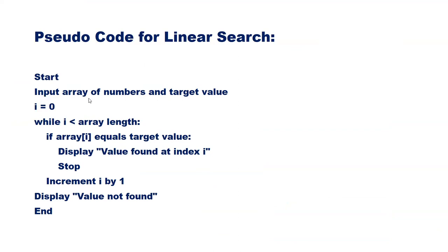Pseudocode: Start. Input array of numbers and target value. i equal to 0. While i less than array length: if a[i] equals target value, display 'value found at index i' and stop. Otherwise, increment i by 1. This is a loop. Once the loop completes, display 'value not found' and end.